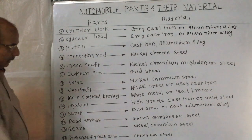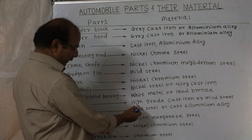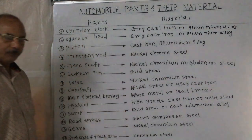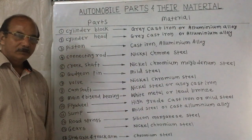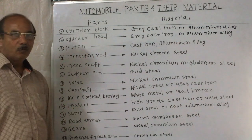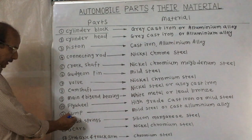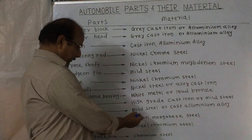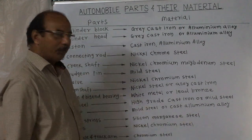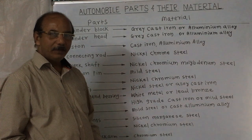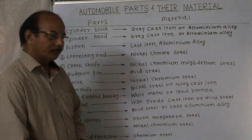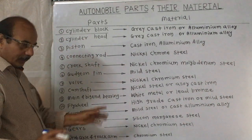Next one is the flywheel. The flywheel is made from high-grade cast iron or mild steel. It works on the principle of moment of inertia. Next is the sump, which is made from mild steel or cast iron alloy. It is fitted below the engine and is used to store the oil and close the crankcase.